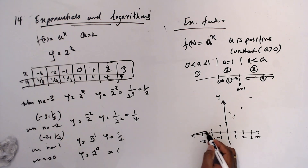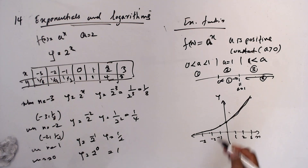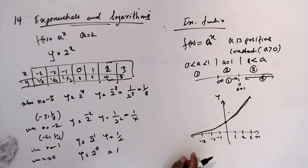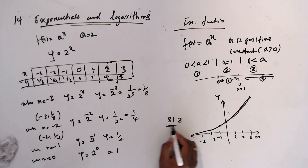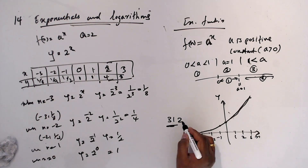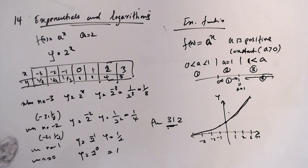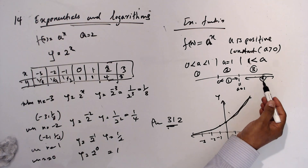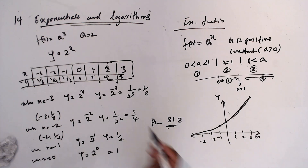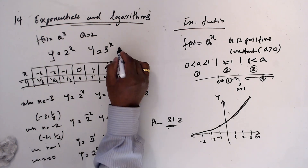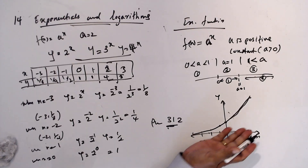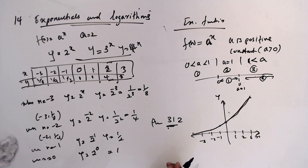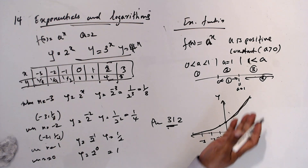You can see this graph on page 312. I selected a = 2, which is from the a > 1 region. If you take 3^x or 4^x, they all have the same shape but with different steepness — we'll discuss gradients shortly.